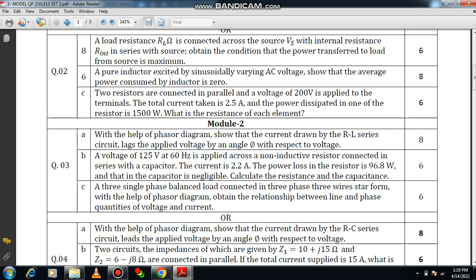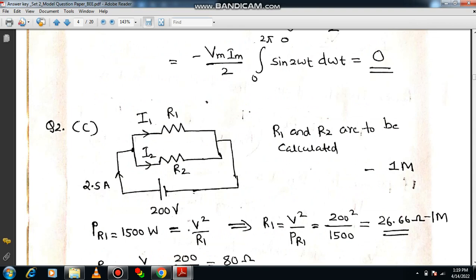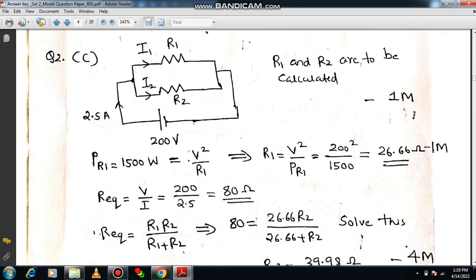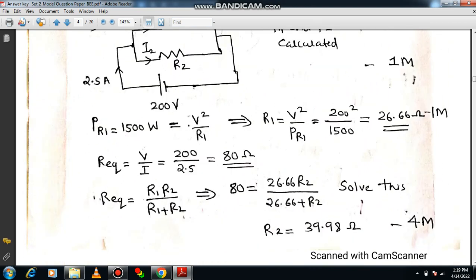Question number 2c. Two resistors are connected in parallel and a voltage of 200 volt is applied to the terminals. The total current taken is 2.5 amps and the power dissipated in one of the resistors is 1500 watts. What is the resistance of each element? So better draw the diagram first. I have drawn the diagram which is shown on the screen. So R1 and R2 both are connected in parallel, current is getting divided as I1 and I2 respectively. If you draw the diagram you will be getting one mark.